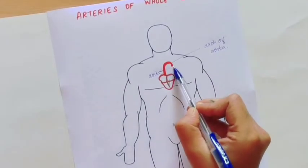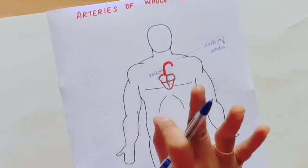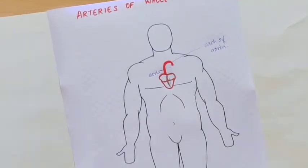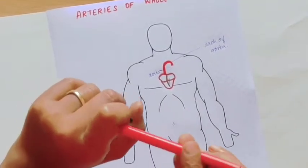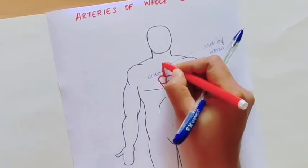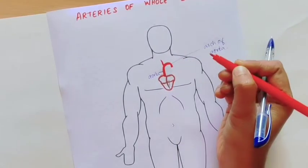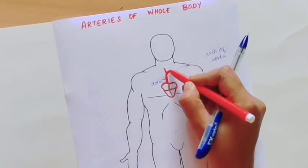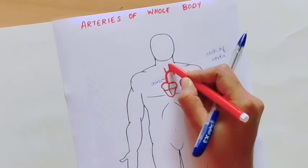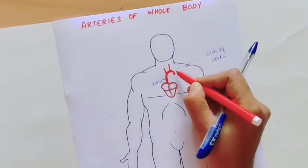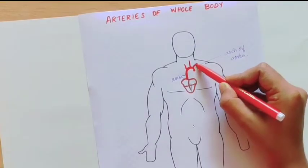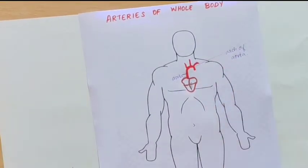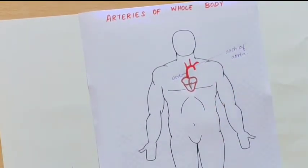In the arch of aorta, three main branches emerge. The first one is the brachiocephalic artery. The second one is the left common carotid artery. And the third one is the left subclavian artery. So these are the three arteries that are emerging from the arch of aorta.